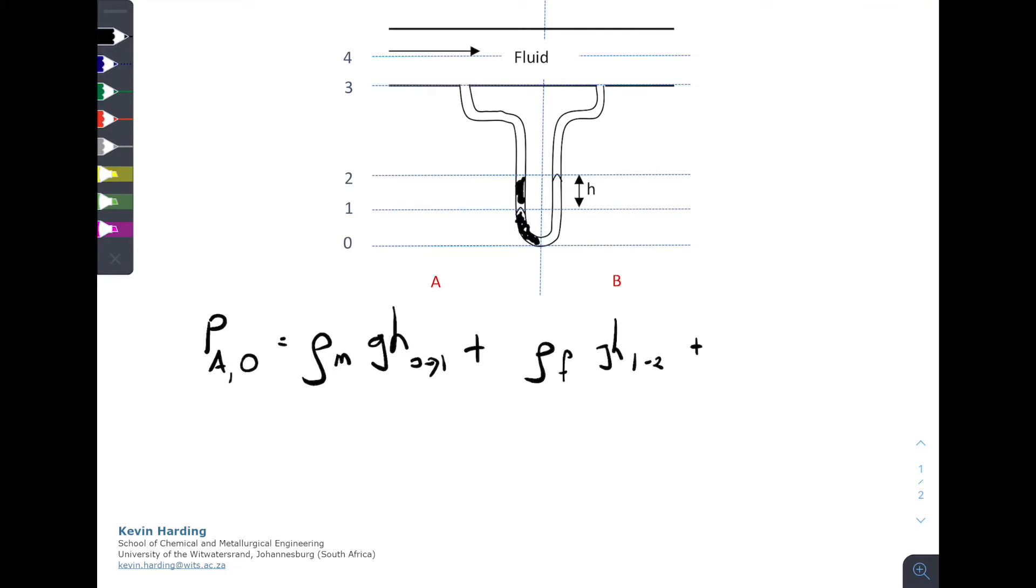The third one is going to be the same, so it's the pressure of the fluid times G times H from 2 to 3. And then lastly, there is going to be pressure in the pipe, so we need to add the pressure on side A in the fluid itself, which is 4.